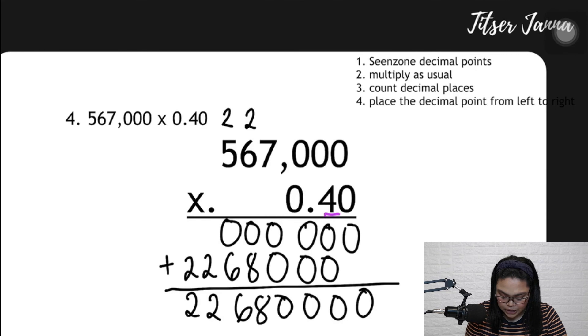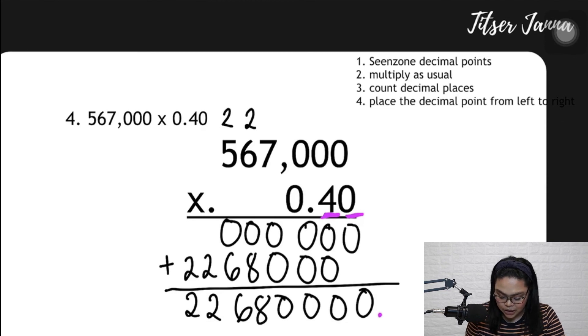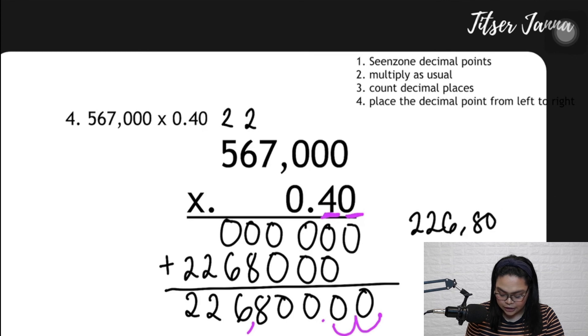And then we count the digits, or the number of decimal places, the digits after the decimal point. Since the whole number is not a decimal point, then it's zero. It's not a decimal place. So we have two decimal places from here. We move from the right going to the left. One, two. So the answer is 226,800.